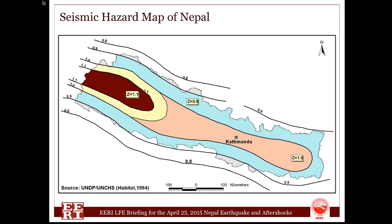This map shows the seismic zoning factors, which are used for the calculation of loads for the design of earthquake-resistant buildings. This also shows relatively higher risk in the western part; however, again, the entire country poses high risk.